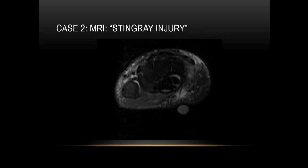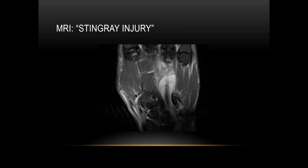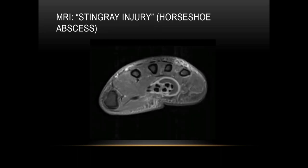This patient had a stingray injury. An axial image with a skin marker overlying the volar aspect of the wrist and anterior to the flexor retinaculum shows a linear low signal intensity foreign body — the stingray barb. A coronal image further demonstrates the barb, and a post-contrast axial image shows this foreign body was associated with a horseshoe abscess in the region of the extensor — excuse me, flexor — retinaculum surrounding the flexor tendons.